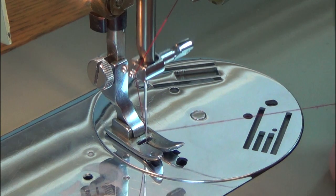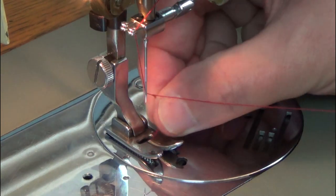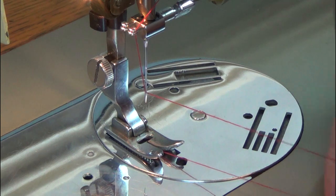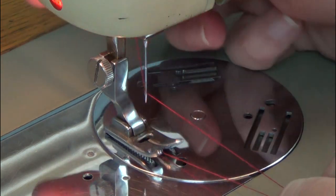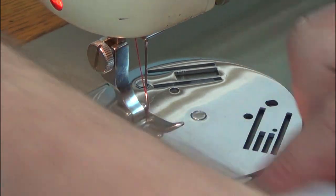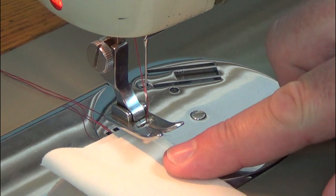While holding the thread tail, turn the handwheel towards you and pull up the bottom thread. Place a piece of fabric under the presser foot, and we're ready to sew.